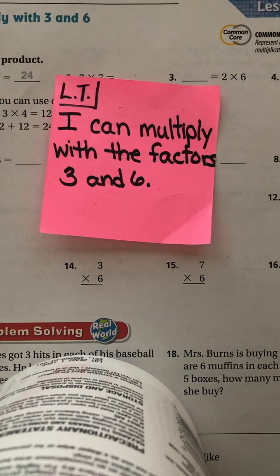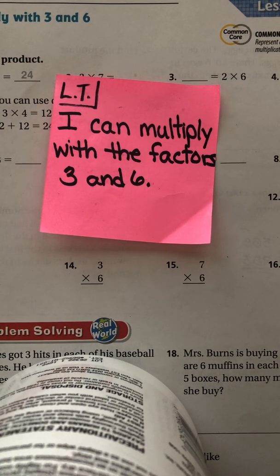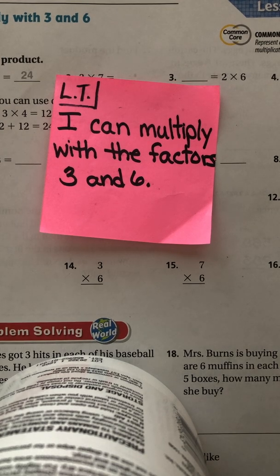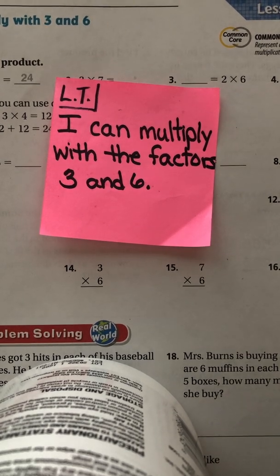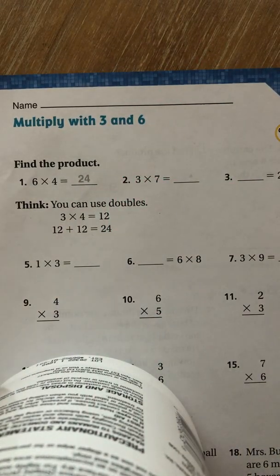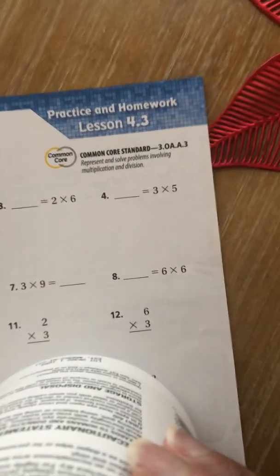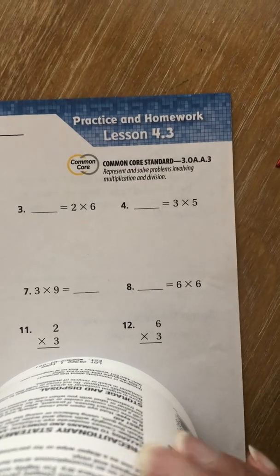I worked with my class and Mrs. Graham's class today, and we finished lesson 4.3 on multiplying with 3 and 6. Here is the learning target: I can multiply with the factors 3 and 6. Tonight's homework should have at the top in the upper left-hand corner, multiply with 3 and 6. On the right-hand side, it should also say practice and homework, lesson 4.3.